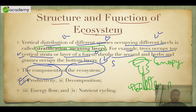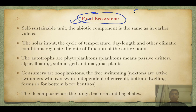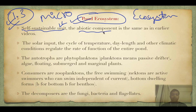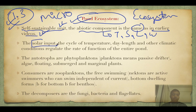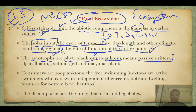The components of ecosystem include productivity and decomposition, which I'll cover in this part, then energy flow, and then nutrient cycling. We'll start with the pond ecosystem as an example of a self-sustainable ecosystem — it is a micro ecosystem. The abiotic components include temperature, soil, light, and water. The solar input, cycle of temperature, day length, and other climatic conditions regulate the rate of function of the entire pond. Everything on Earth is directly or indirectly dependent upon the sun.